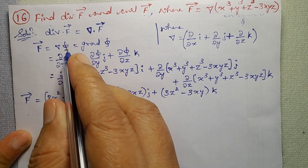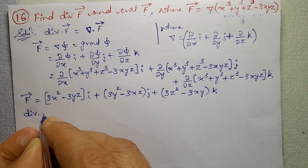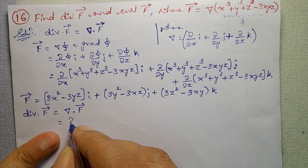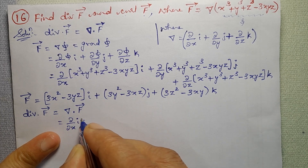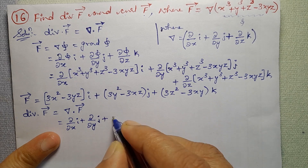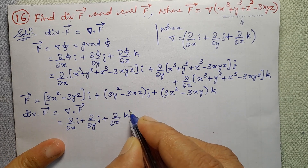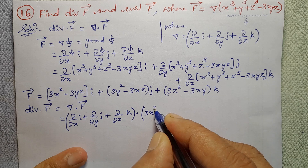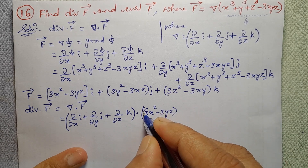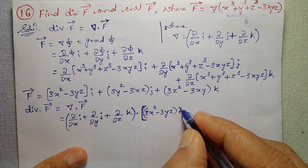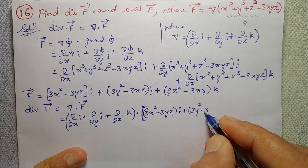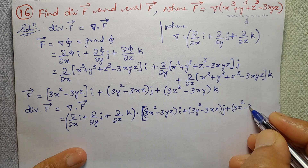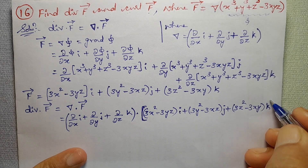Divergence of vector F equals del dot vector F. So del is (d/dx i + d/dy j + d/dz k) dotted with vector F, which is (3x² − 3yz)i + (3y² − 3xz)j + (3z² − 3xy)k.